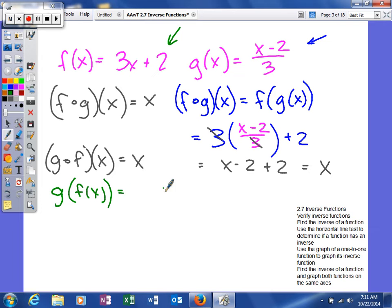Our g function tells us to subtract two and divide by three. When we plug in our f function of three x plus two, we're going to subtract two, then divide by three. When you subtract two, you end up with three x divided by three, which equals x.